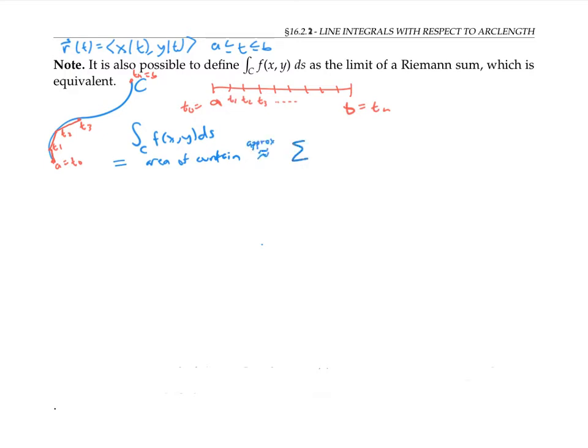And we can write the area of the curtain as the sum of the length of line segment i times the height of the curtain.